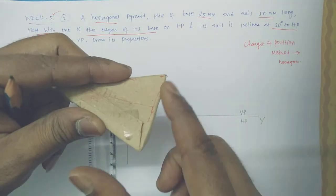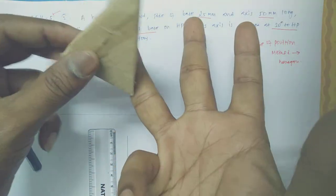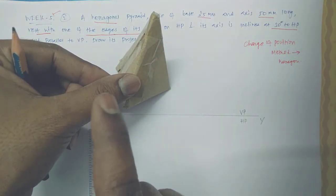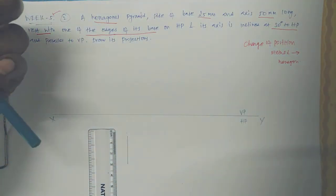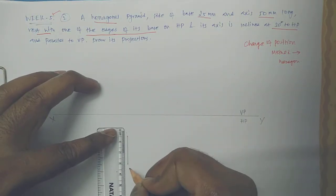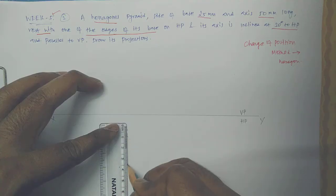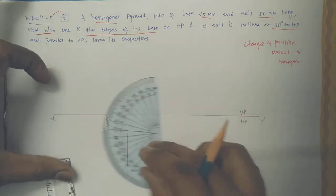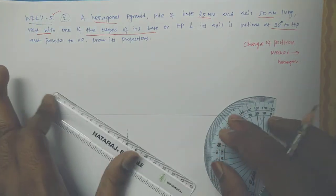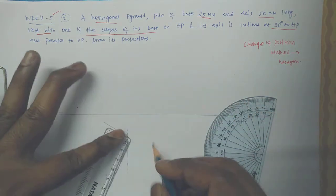The hexagon is standing like this on one of its edges, and we are going to tilt it. This is the top view I'm showing. We draw the front view and top view. For the first step — simple position — the base rests on HP. To draw the hexagon you need to use the exterior angle method, which must be 60 degrees.